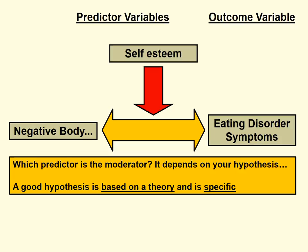If you wanted to represent this pictographically, you might use the convention showing the relationship between negative body image and eating disorder symptoms moderated or influenced by self-esteem. You may ask: which of our two predictor variables is the main predictor and which is the moderator? It really depends on your hypothesis. You could flip these variables around and say self-esteem has a relationship with eating disorder symptoms and that relationship is moderated by negative body image. How you frame this depends on your specific theory and the hypotheses you're trying to test.